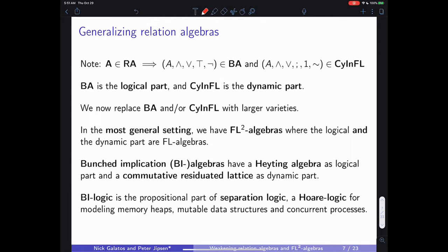Let's look at using this technology to generalize the point of view of relation algebras. We observe that a relation algebra has a Boolean part — already seen in the definition — but the new perspective is that instead of a monoid plus the De Morgan theorem K, we look at the other part as also a cyclic involutive FL algebra, with composition, identity, and linear negation. The Boolean algebra can be thought of as the logical part, making relation algebras classical.